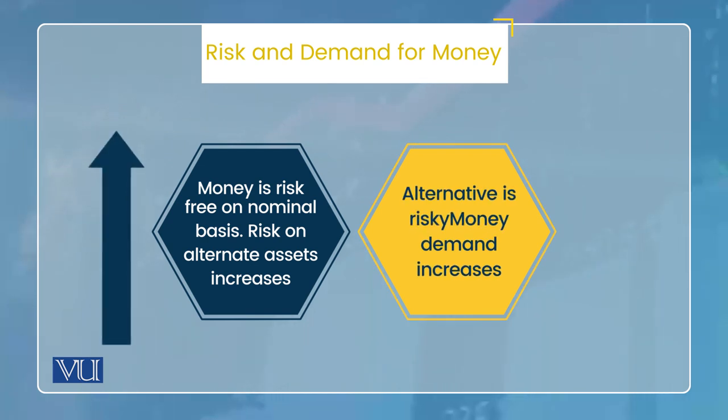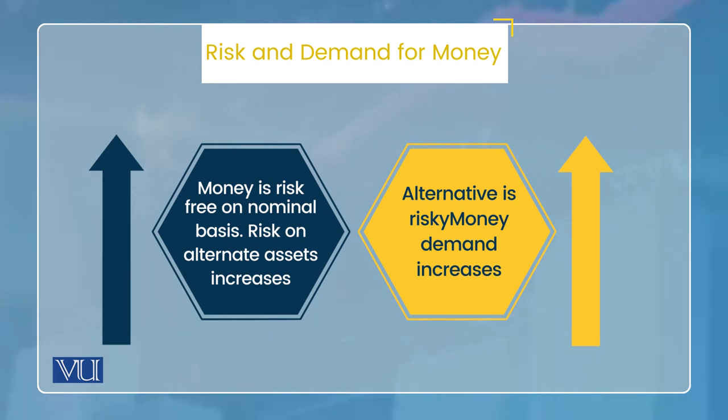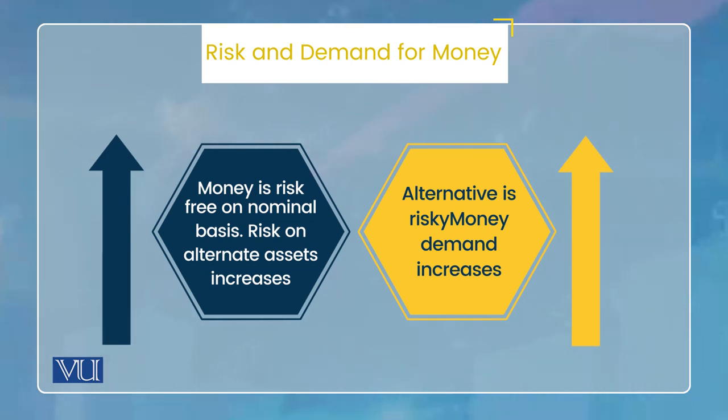Toh yahan pehle yeh samajhna padega ki money ke upar risk hota bhi hai ya nahi. Chunke hum portfolio theory mein yeh padh chuke hain ki risk kisi bhi asset ki demand mein apna role play karta hai, toh question toh hoga ki money kya risky asset hai? Toh yaad rakhein: money ko agar nominal form mein dekhen, then it is not risky. Jis note ke upar aaj 1000 rupaya likha hua hai, woh 5 saal bhi pada rahe, uski upar 1000 rupaya hi likha hoga. Money nominal form mein risky nahi. Lekin money real form mein risky hoti hai.